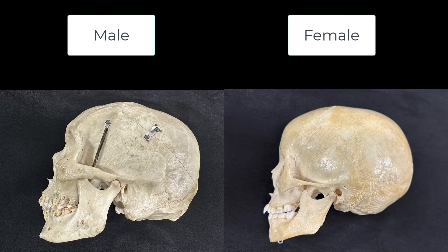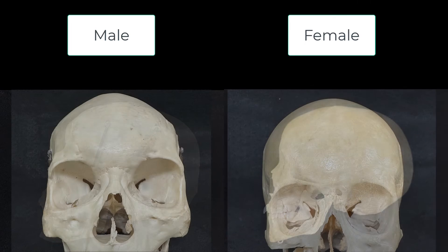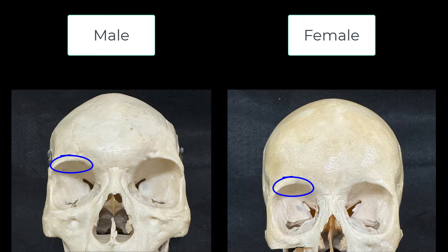The skull also exhibits sexual dimorphism. The mastoid process of the temporal bone in males is larger and more pronounced. The angle of the mandible and mental protuberance, or chin, are both usually more acute in males. And finally, the superorbital margins are typically sharper and more pronounced in males.